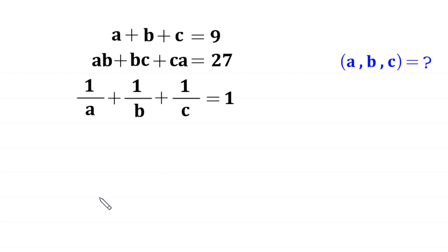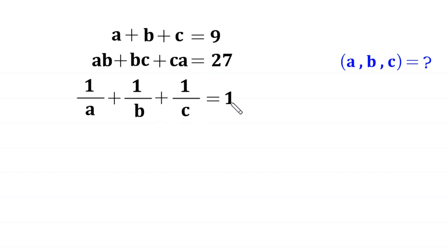Hello everyone, you are welcome to how to solve this very nice system of equations. a plus b plus c is equal to 9, ab plus bc plus ca is equal to 27, and 1 over a plus 1 over b plus 1 over c is equal to 1. Our job is to find all possible values of a, b and c.